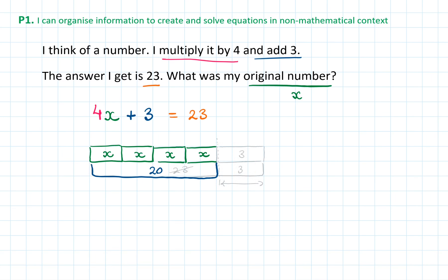And then we have that 4 lots of x going to 20. Therefore, 1x will be 20 divided by 4, which is 5. So we can say that x equals 5. We can also give a full answer by saying that the original number was 5.